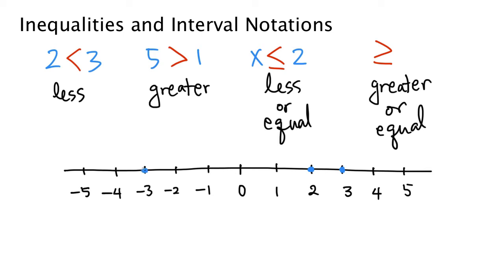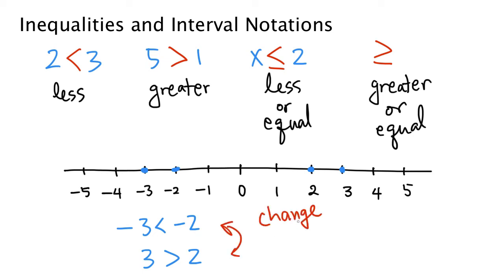If you look at the negative numbers — for example, negative 2 and negative 3 — negative 3 is on the left and negative 2 is on the right. So negative 3 is less than negative 2. Compare this with positive numbers: 3 is greater than 2. This is an important observation: if we change signs, we reverse the direction of inequalities.